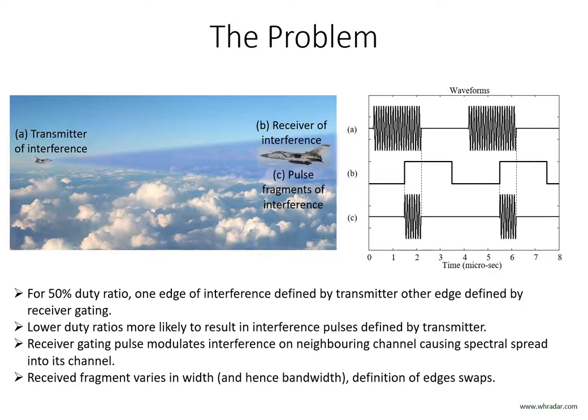Furthermore, the definition of the rising and falling edges of the interference fragments will also swap between the transmitted modulation and the receiver gating. The whole situation is in a state of constant flux, and both the transmitting radar and receiving radar play their part in creating and therefore controlling the interference. The next few slides show some examples of this.